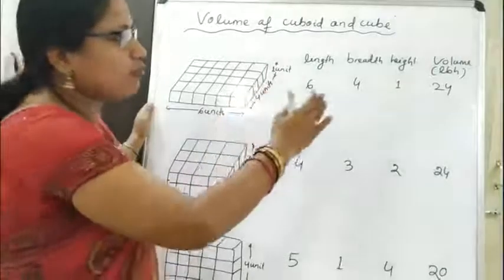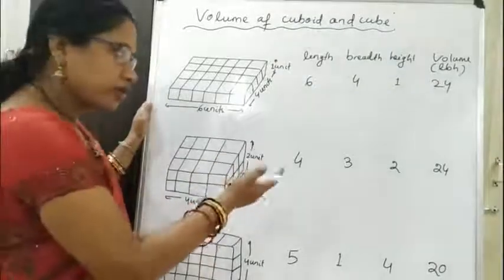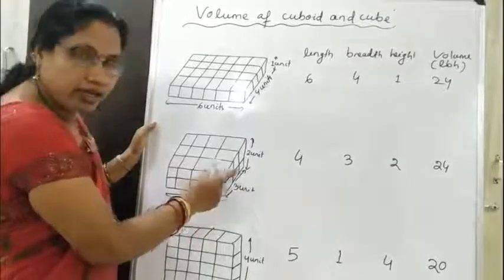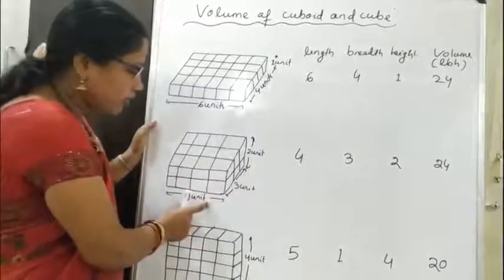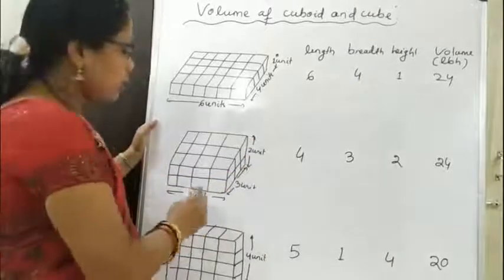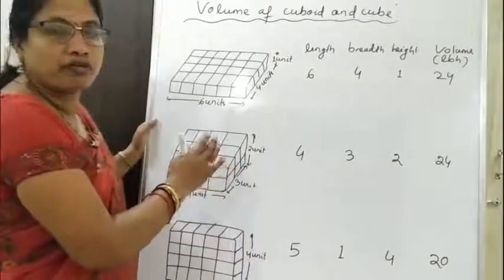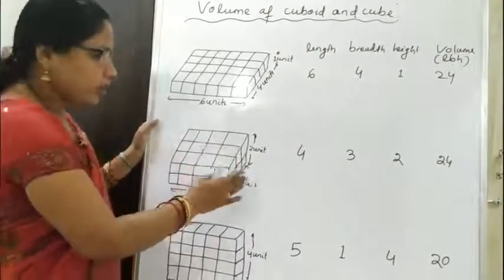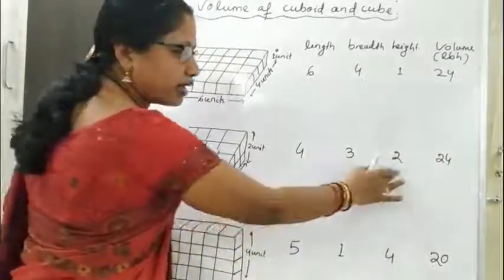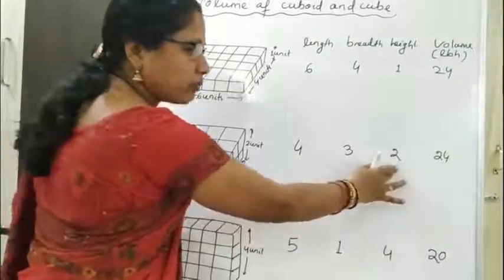Here the same 24 unit cubes are arranged to form another cuboid having length 4 units, breadth 3 units, and height 2 units. The 24 unit cubes have a volume of 24 cubic units, and 24 can be obtained by multiplying length, breadth, and height — that is 4 × 3 × 2.